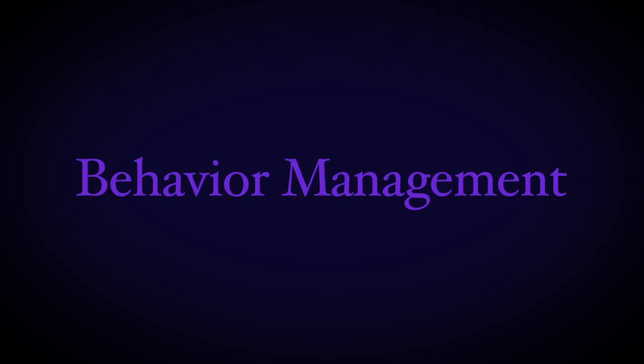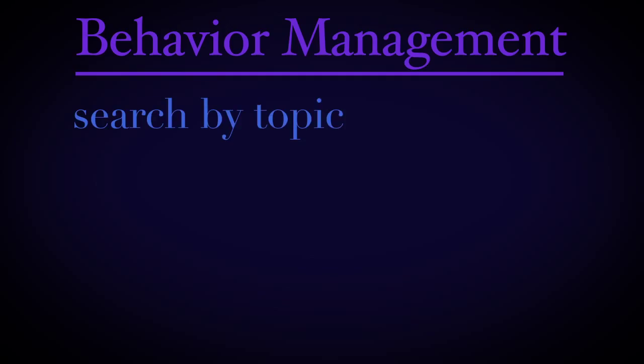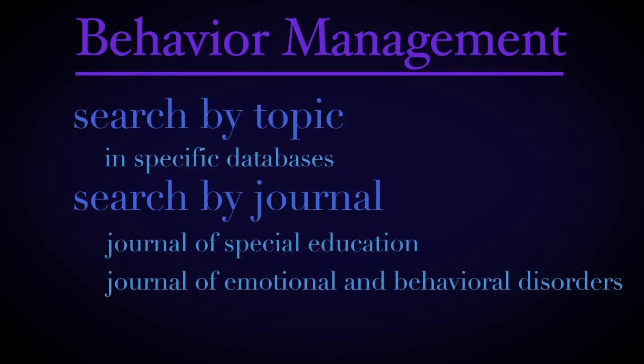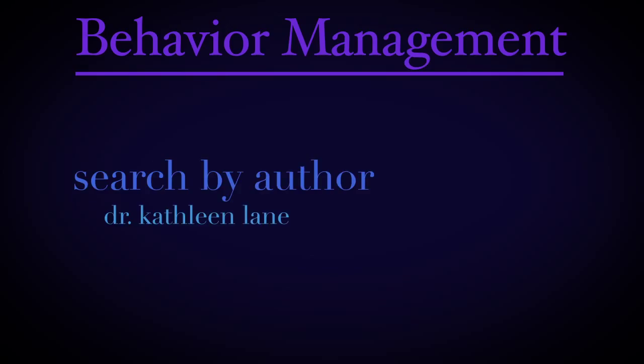For example, if you were searching for information on behavior management, you can approach your search in several ways. You can search by topic by typing your search terms into specific search databases like ERIC or PsycInfo. You can also search by journal — for behavior management, you may choose journals like the Journal of Special Education, the Journal of Emotional and Behavioral Disorders, or Teaching Exceptional Children. You might also choose to search by author — for instance, Dr. Kathleen Lane here at KU is very knowledgeable about behavior management, and you would like to search all of her work regarding it.